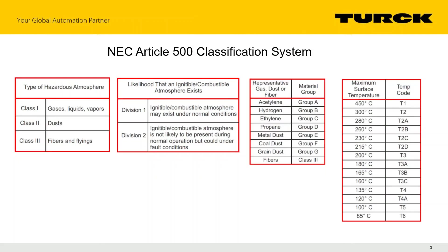Article 500 — we're not going to concentrate on the zone system today; we're going to do classes and divisions. Basically, just understand that there is another system that's quite similar but has some different features. Classes and divisions are still pretty prevalent in the United States and probably will be for some time to come.